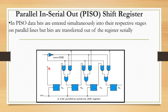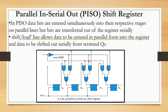The D input and Q output connections are similar to before. The parallel input lines are labeled A, B, C, and D — these can be loaded in parallel. To control whether data is shifted or loaded, we use a Shift/Load bar signal. When Shift/Load bar is active (low), data is entered into the register in parallel form. Data is then shifted out serially from terminal QD using AND and OR gates for the load connection.